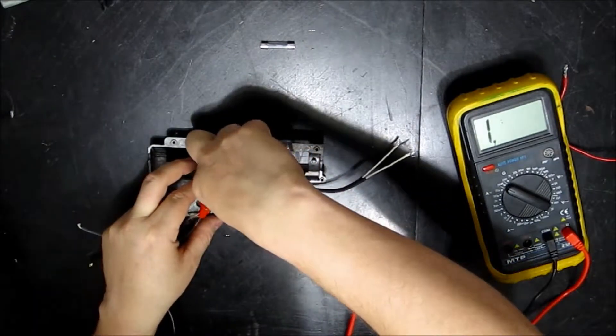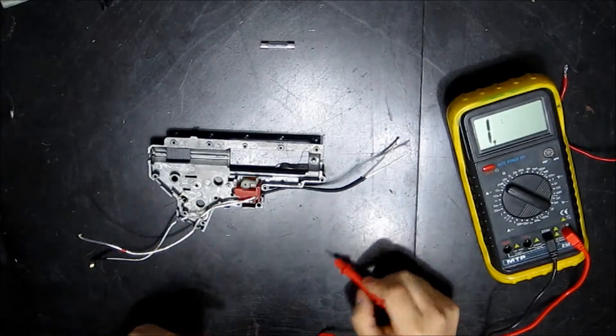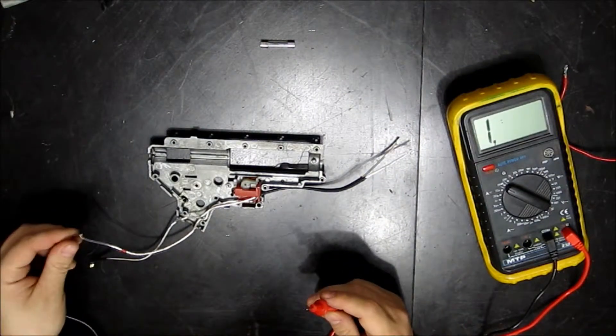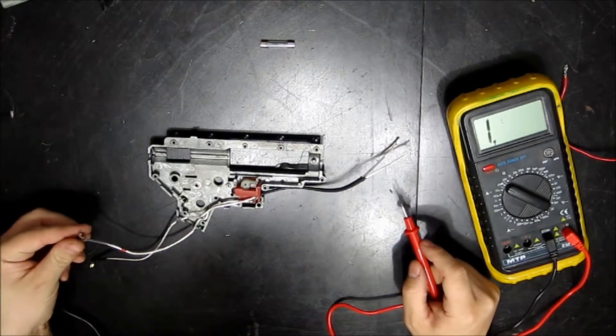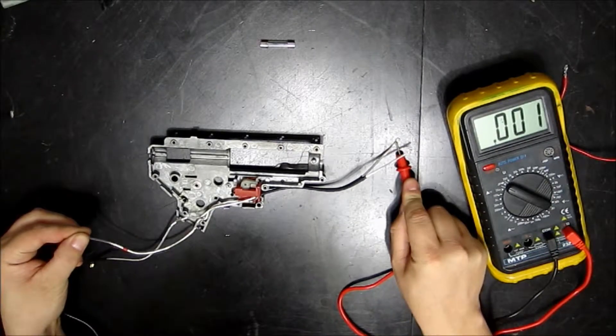When you pull the trigger, it makes the connection to allow electricity from the battery to flow to your motor. So if I have a good trigger unit here, I should hear a beep here with my trigger depressed. And I do.